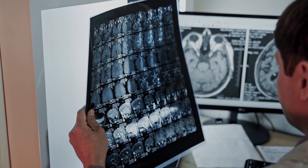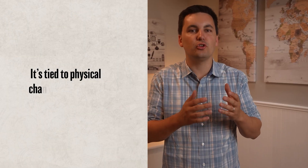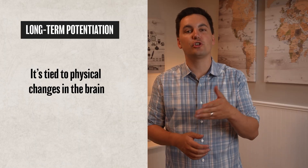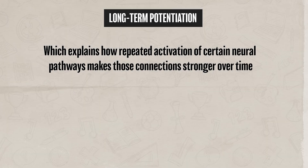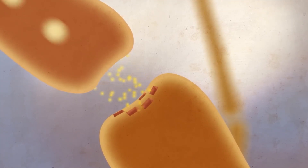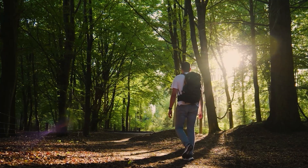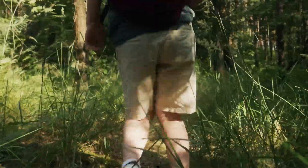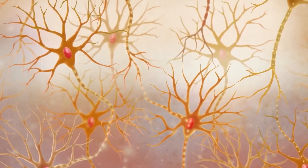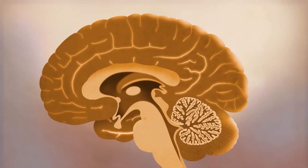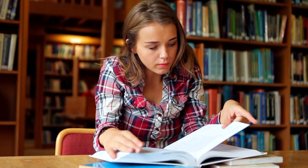Psychologists have found that memory isn't just about storing information like a computer. Instead, it's tied to physical changes in the brain. One key process behind this is called long-term potentiation, which explains how repeated activation of certain neural pathways makes those connections stronger over time, strengthening the synaptic connections between neurons through repeated activation. Think of long-term potentiation like building a path through the woods — the first time you walk through, it's tough, but the more often you walk the same path, the clearer and easier it becomes. When neurons fire together repeatedly, the connection between them gets stronger, allowing you to store and retain knowledge and skills over time.